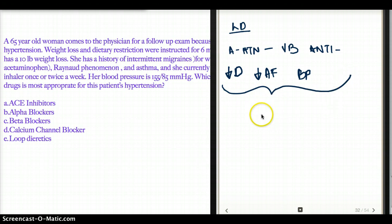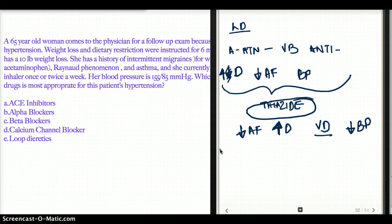Instead of loop diuretics, what is a better drug is going to be thiazide. Thiazide not only decreases our afterload, not only increases diuresis, it also has a vasodilatory effect. And that vasodilation is going to decrease our blood pressure. I would have considered maybe thiazide for antihypertensives, but not loop diuretics. That's not the best drug.